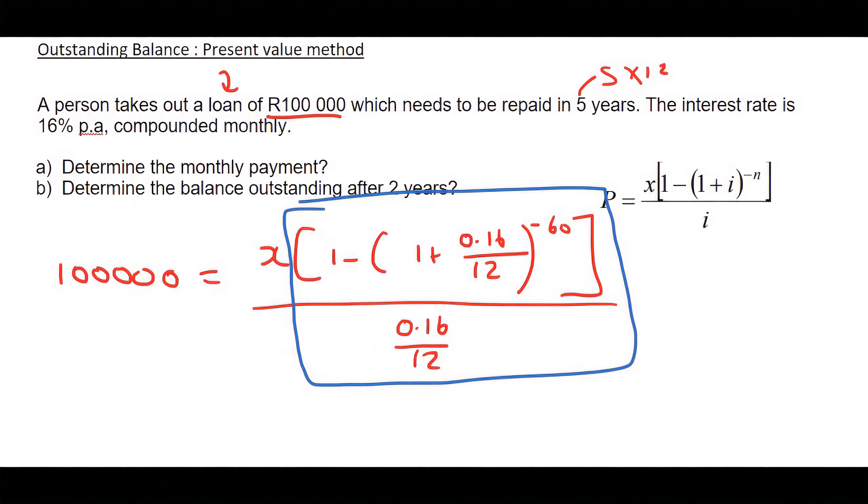Now, you don't want to round off when you do this method. So we'll say 100,000 equals 41.1217062x. Then you can get X alone.